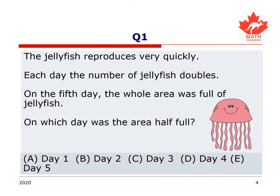Let's try something. Let's try question one. The jellyfish reproduces very quickly. Each day, the number of jellyfish will double. On the fifth day, the whole area was full of jellyfish. Tell me, on which day was the area half full? Was it on day one, day two, day three, day four, or day five?